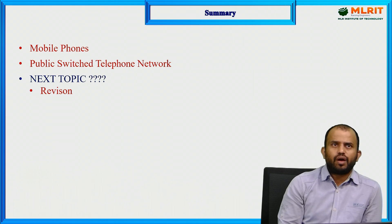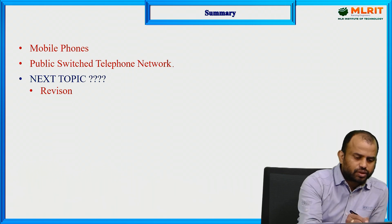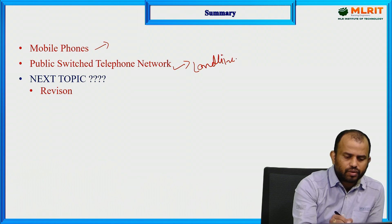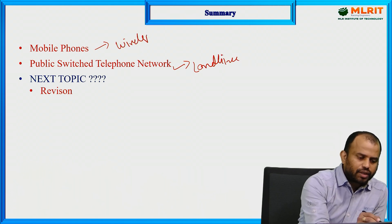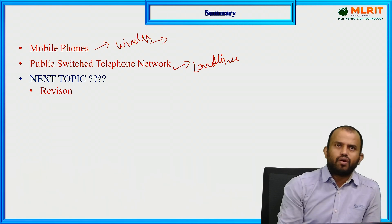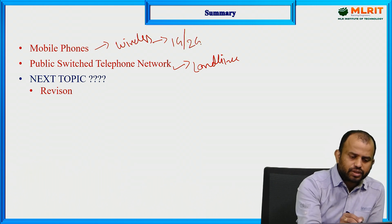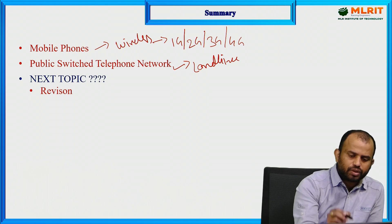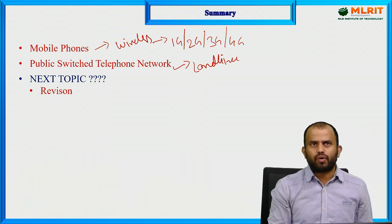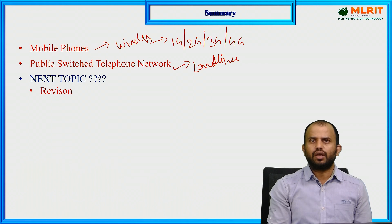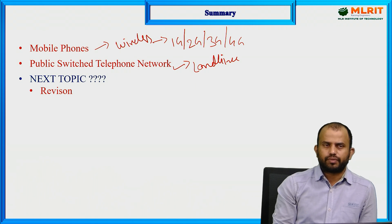In this session, we discussed two main topics: the public switching telephone network, which is the landline communication system, and the mobile phone network as a wireless communication system. We covered the evolution of mobile phone generations — first, second, third, and fourth generation wireless solutions — and how each generation brought revolutionary improvements over the previous. In the next session, we will discuss the evolution of computer networks. Thank you.